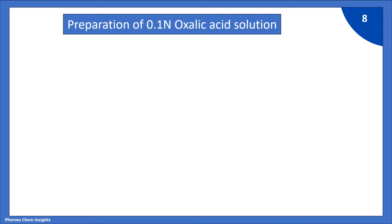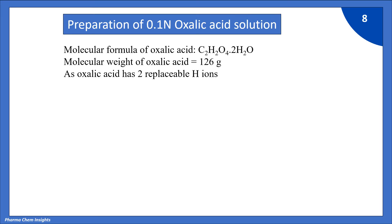Now let us see how to prepare 0.1 normal oxalic acid solution. So molecular formula of oxalic acid is C2H2O4·2H2O. Oxalic acid is in dihydrate form that is it has 2 moles of water. Molecular weight of oxalic acid is 126 grams. As oxalic acid has 2 replaceable H+ ions. So equivalent weight of oxalic acid is 126 divided by 2 that is 63 grams.